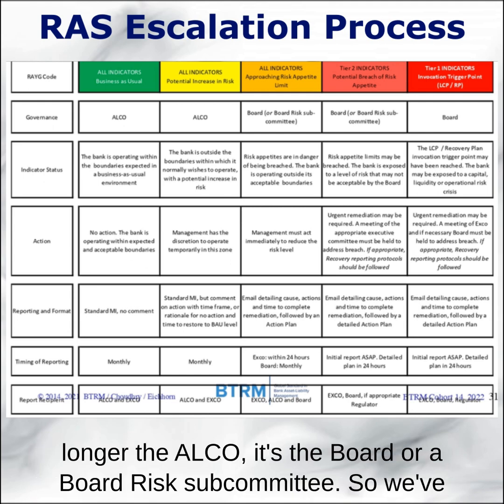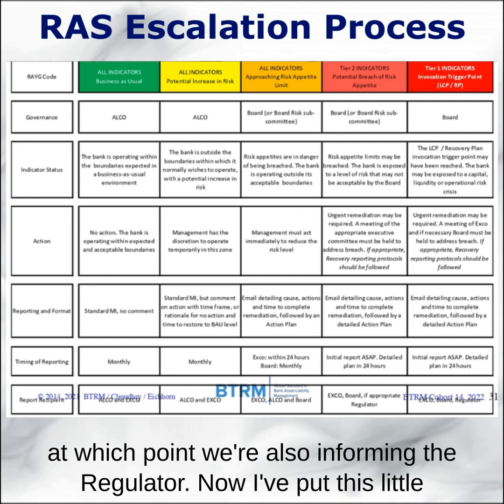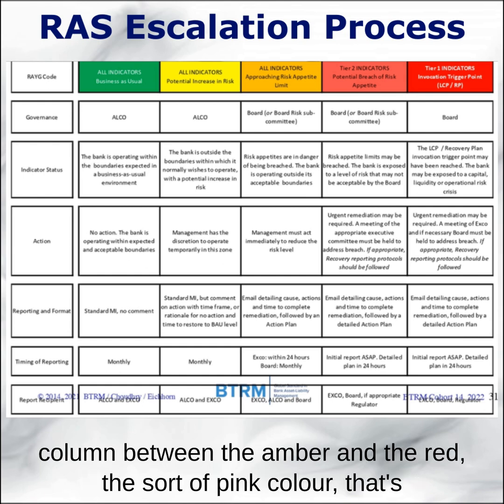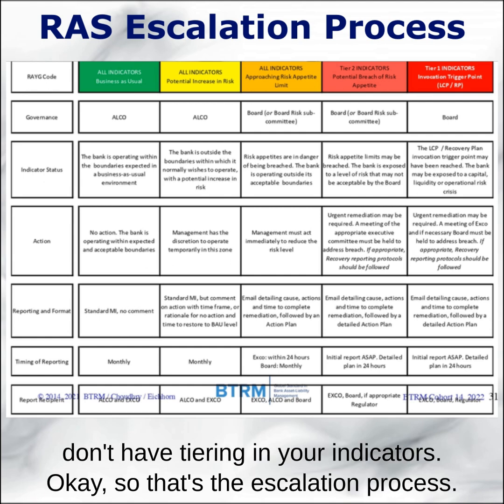Only if it goes beyond yellow into amber do we start escalating. The governance is no longer ALCO — it's the board or a board risk subcommittee, so we've escalated it. And then if it goes into red, we've escalated it still further, and we're also informing the regulator. I've put a little column between amber and red — a sort of pink colour — which is basically if a tier-two indicator goes into red. You can ignore that if you don't have tiering in your indicators.